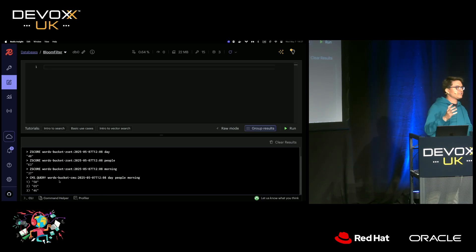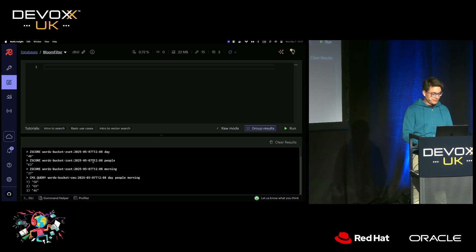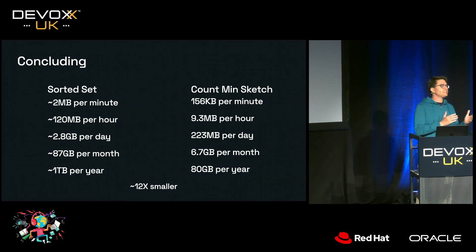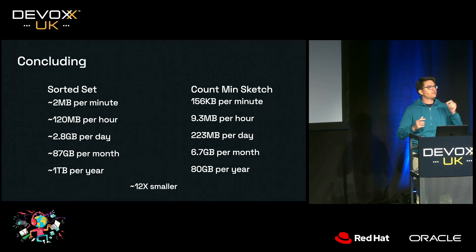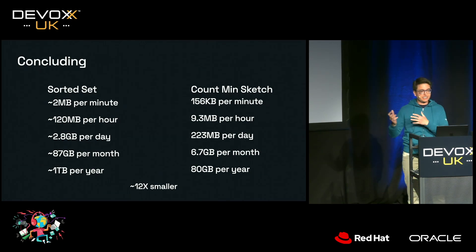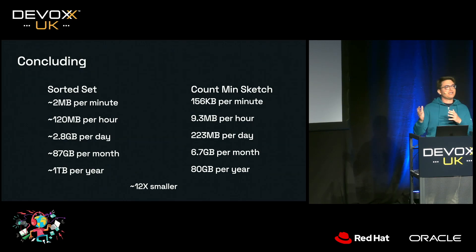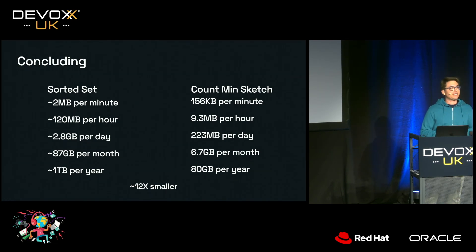If we're counting a million elements and it returns a million and 5,000, it doesn't really matter for this and many other use cases. To conclude: if I had used a sorted set, I would be using around 1 terabyte of data per year for 22,000 unique words. With a counting sketch, I'd use 80 gigabytes per year — or 6.7 gigabytes per month compared to 87 gigabytes for sorted sets — approximately 12 times smaller. And since Blue Sky's usage can increase, we don't know if tomorrow's data will still be 2 megabytes per minute.